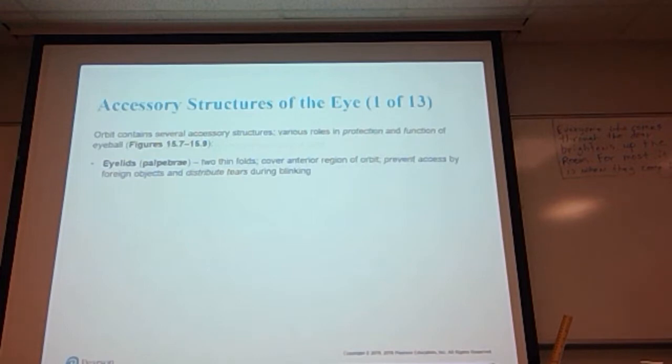The orbit contains several accessory structures which play roles in protection and function of the eyeball. The eyelids, clinically referred to as the palpebrae, are two thin folds of skin. They cover the anterior region of the orbit, prevent access to foreign objects, and distribute tears when blinking.